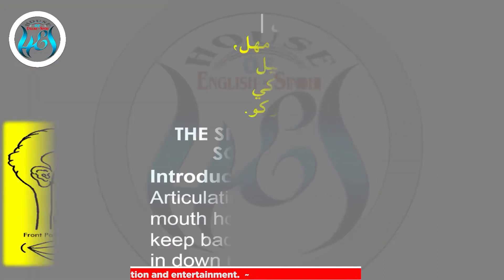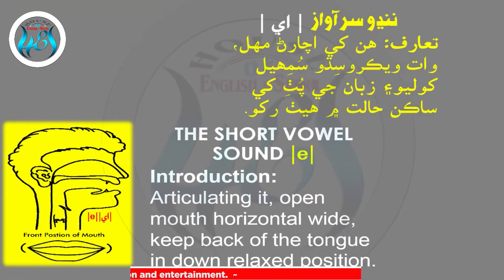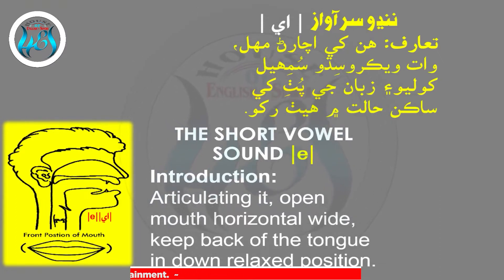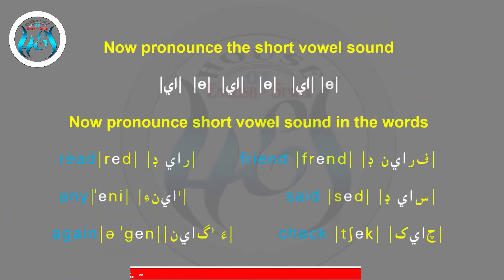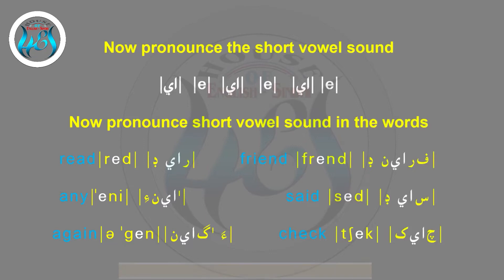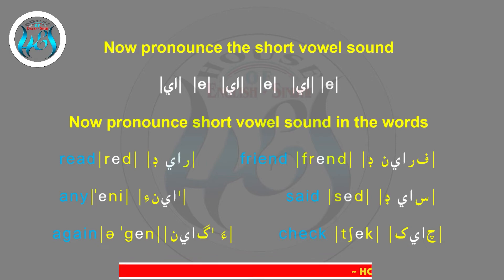The short vowel sound /e/: articulating it, open the mouth horizontally wide and keep the back of the tongue in a down relaxed position. Now pronounce the short vowel sound: eh, eh, eh. It is also pronounced as eh.